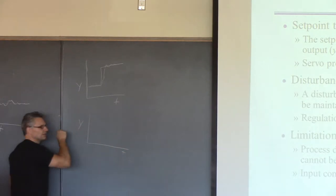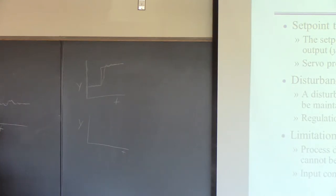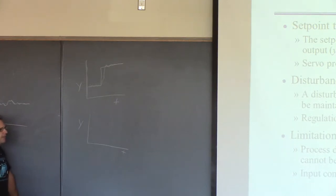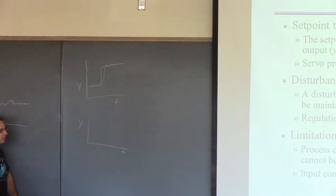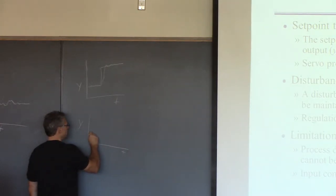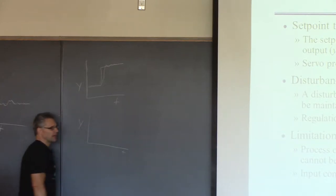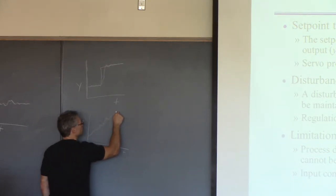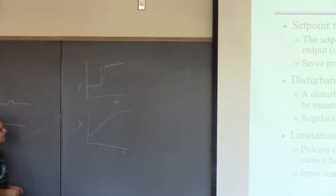In batch processes, like batch chemical reactors, you typically operate with a time-varying policy — the temperature you want changes over time. You can calculate the best temperature trajectory to maximize yield. So if you're in a batch process, you might have some predetermined temperature profile that you're trying to track. This has been pre-calculated, and the controller's job is to keep the temperature near this predetermined set point. Both of those are set point tracking problems.